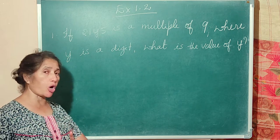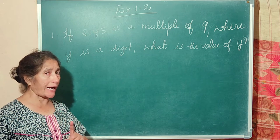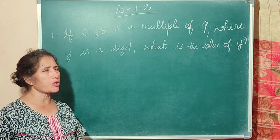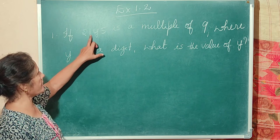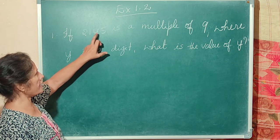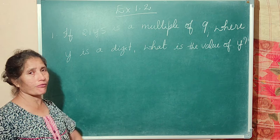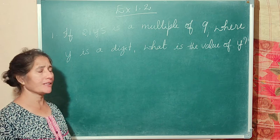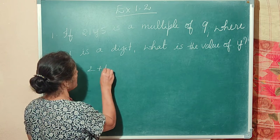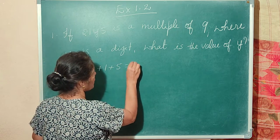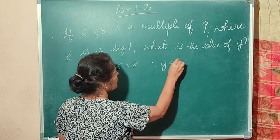To solve this, we use the test for divisibility of 9: add all the digits and the sum should be a multiple of 9. So 2 plus 1 is 3, and 3 plus 5 is 8. So the value of y must be 1, because 2 plus 1 plus 1 plus 5 equals 9. Therefore y is equal to 1.